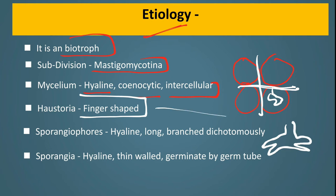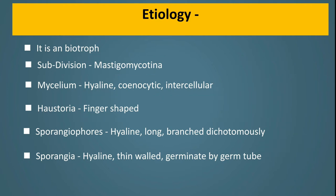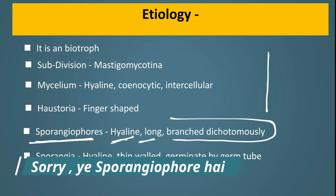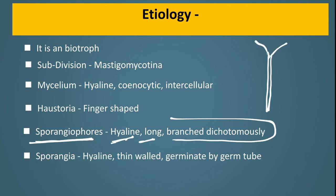The haustoria are finger-shaped. The asexual spores are sporangiophores, and in these sporangiophores sporangia are formed. Sporangiophores are dichotomously branched, long and hyaline. They divide into two branches, then again into two more branches — this is the dichotomous branching pattern. The sporangia are oval, thin-walled and hyaline.